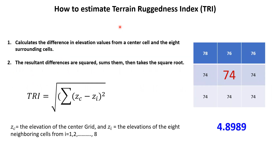How to estimate it? If we have a 3x3 domain digital elevation model, the values in this domain are elevation values. The estimation of TRI requires us to first estimate the difference between the center pixel and the surrounding eight pixels, then estimate the summation. After estimating the summation, we estimate the square for each one, and then the square root of all values.